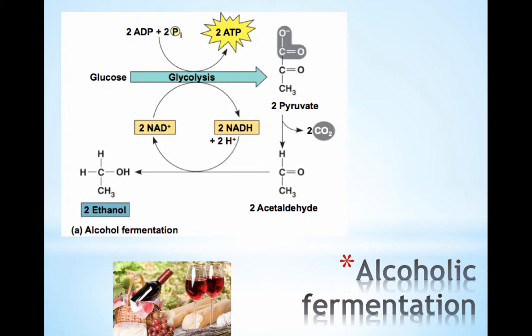This is called alcoholic fermentation, catalyzed by specific microbial enzymes. Glucose is broken down into two pyruvates, two ATPs are made, and two NADHs are made. The two pyruvates are then broken down into ethanol, releasing CO2 and creating alcohol, but regenerating NAD+.